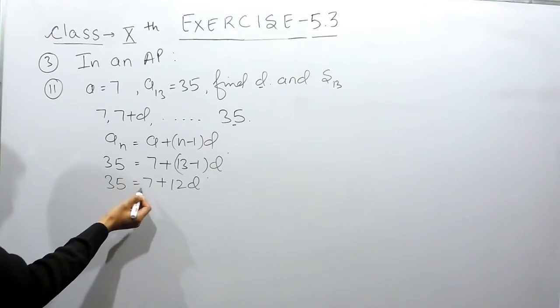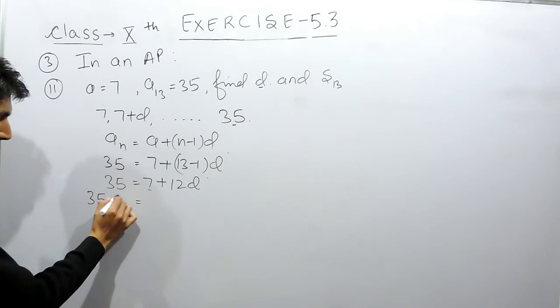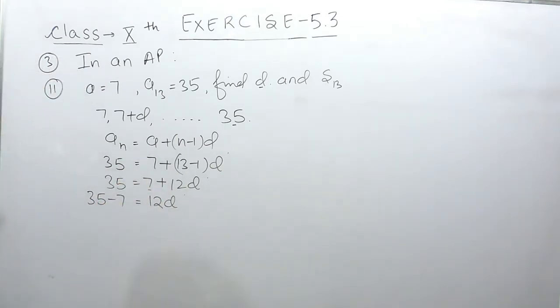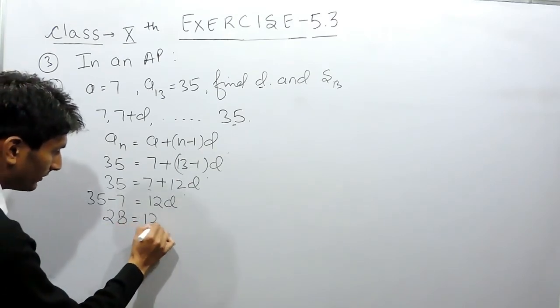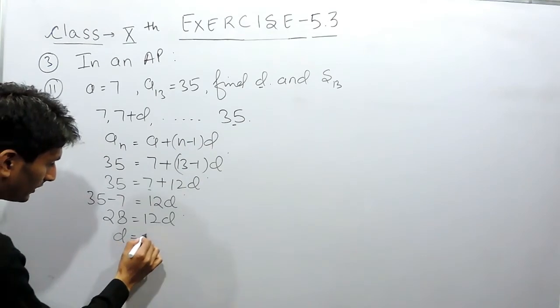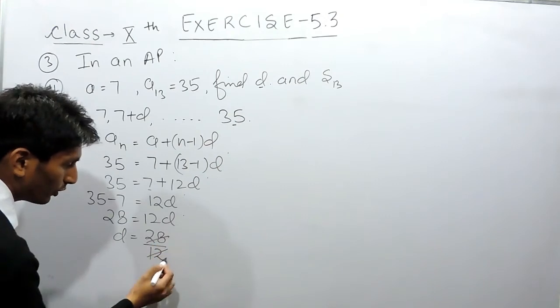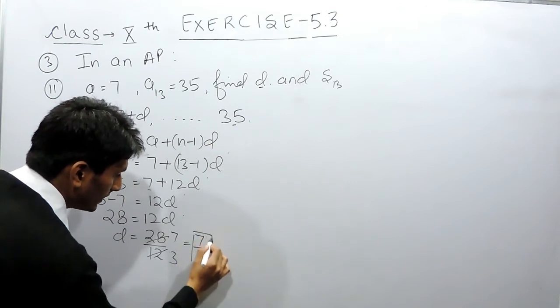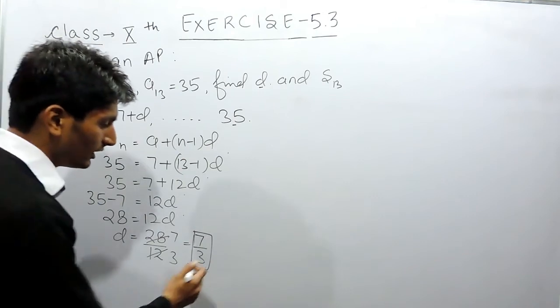If I shift this constant to this side, this will be 35 minus 7 equals 12d. Now 35 minus 7 will be 28, and this will equal 12d. The common difference will be equal to 28 upon 12, which equals 7 by 3. So the common difference here must be 7 by 3.